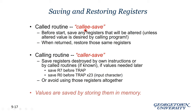In callee save protocol, the callee saves any registers that will be altered by its execution. In caller save protocol, the caller saves all registers it is currently using. The saved values are stored in temporary memory locations accessible by the caller and callee, and then restored appropriately afterward.